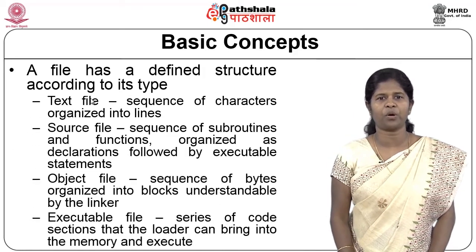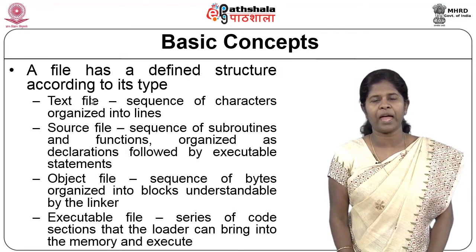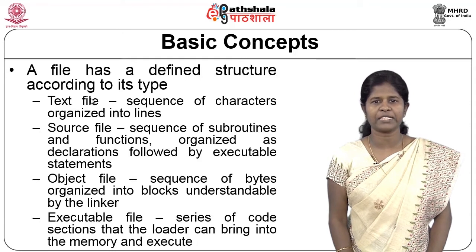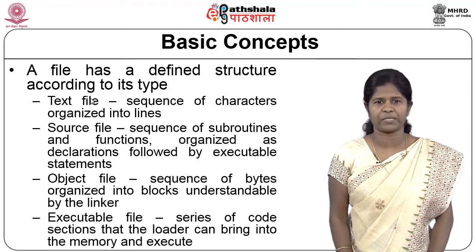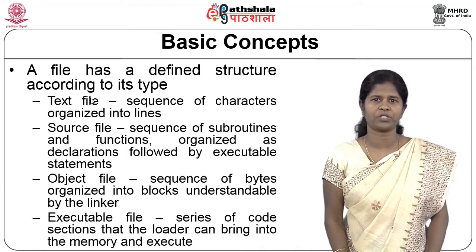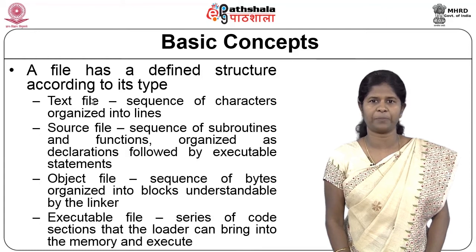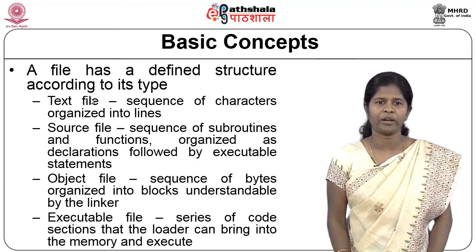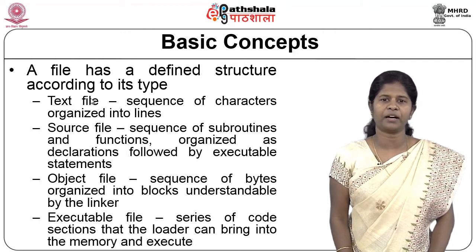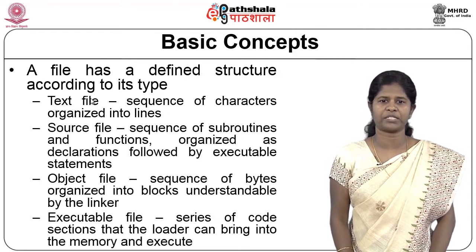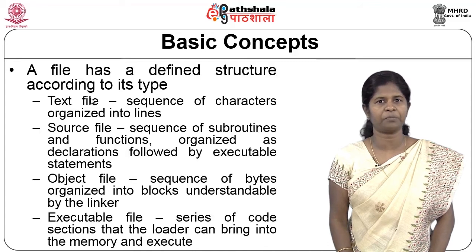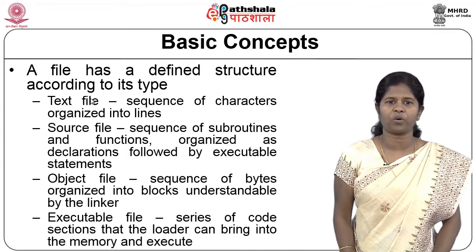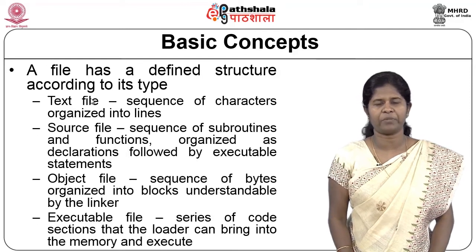Each file has a defined structure depending on its type. A text file is a sequence of characters organized into lines. A source file contains subroutines and functions organized as declarations followed by executable statements. An object file has a sequence of bytes organized into blocks in a format understandable by the linker. An executable file has a series of code sections that the loader can load into memory and execute.